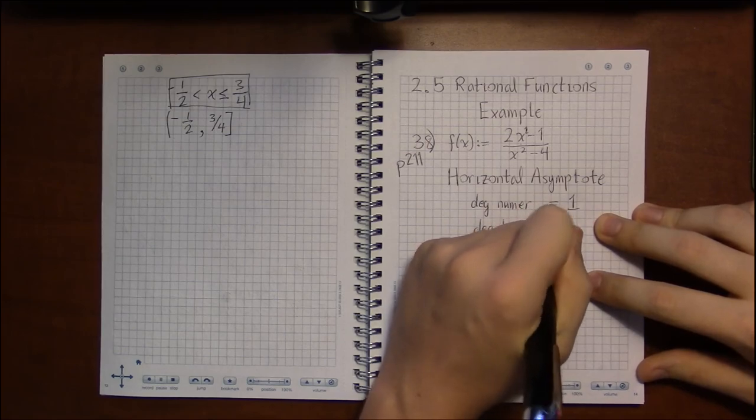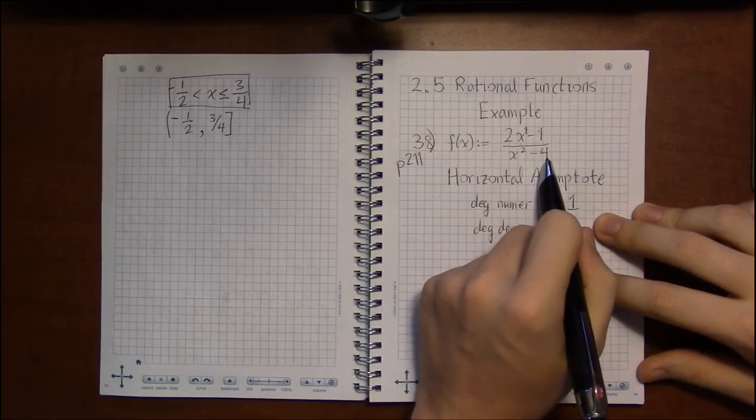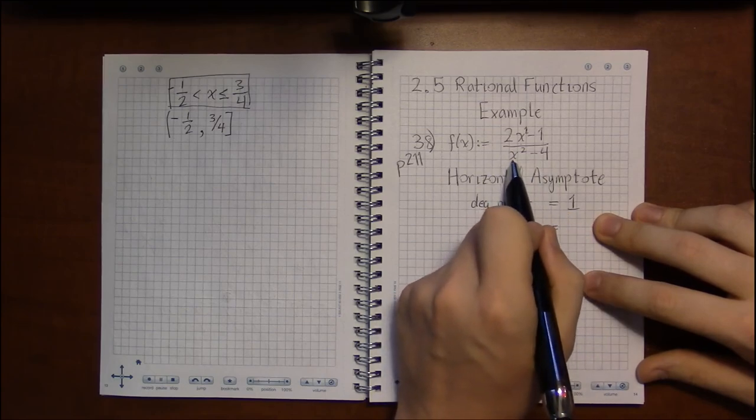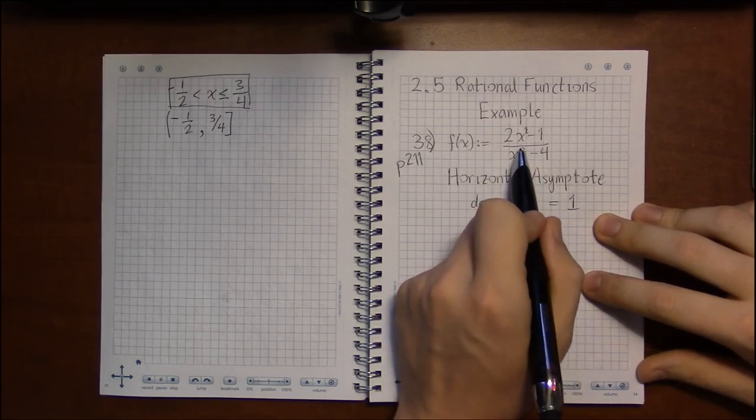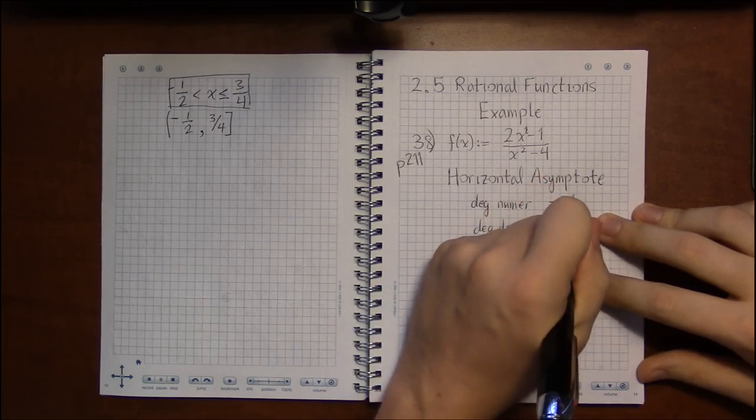And then the denominator is a little easier. I don't see any x's on the last term, on the minus 4, but on x squared, the highest exponent I see here is 2.